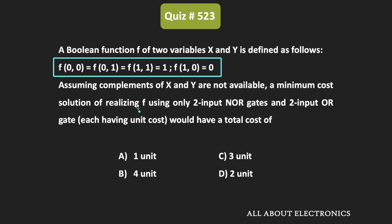We have been given that the complements of the x and y variables are not available. We have been asked to find the minimum required cost for implementing this function using the two input NOR gate as well as the OR gate. The cost of the NOR gate as well as the two input OR gate is 1 unit.